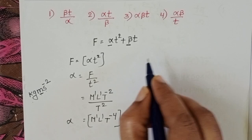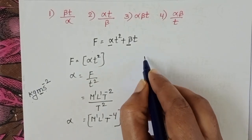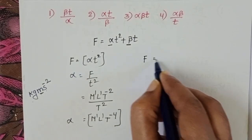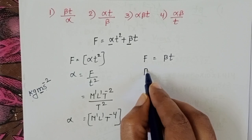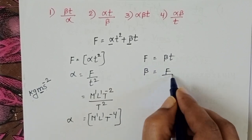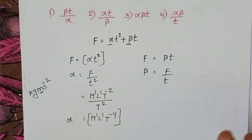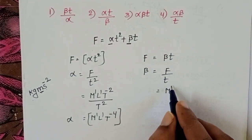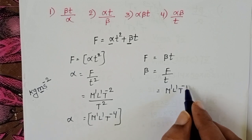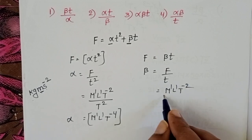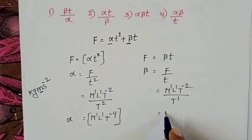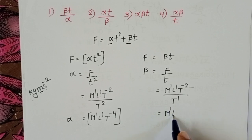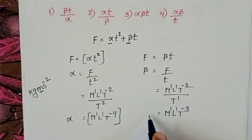Similarly, find the dimensions of beta. F equals beta t, so beta equals F divided by t. Dimensions of force are M power 1, L power 1, T power minus 2, divided by T power 1. Therefore, dimensions of beta become M power 1, L power 1, T power minus 3.